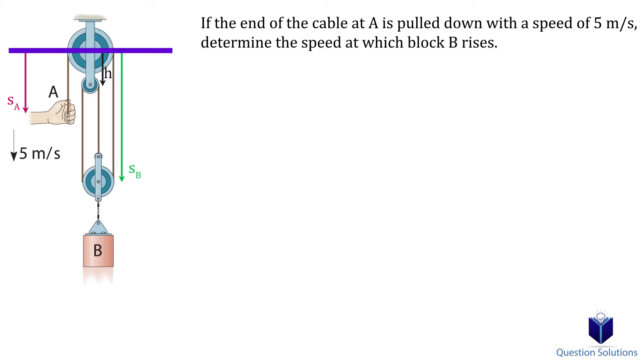That length we will label H. Now this pulley system is made of just one chord, so we only need one equation to represent the rope. So we have SA plus SB plus 2 times SB minus H. That's equal to the total length.